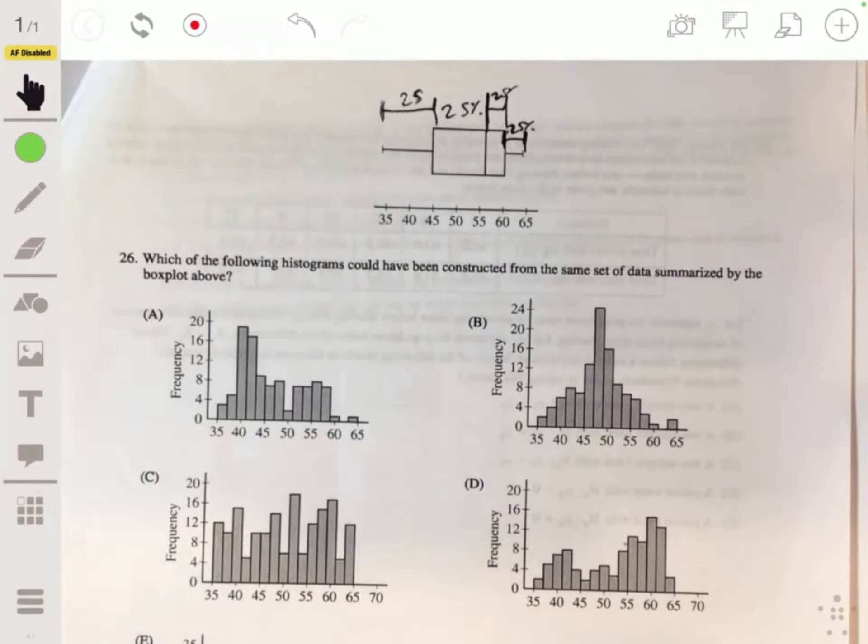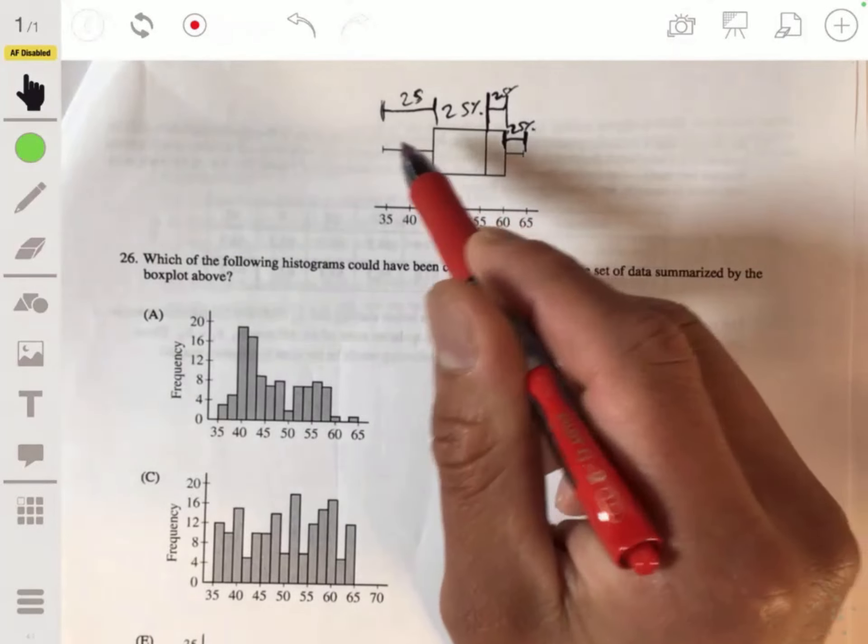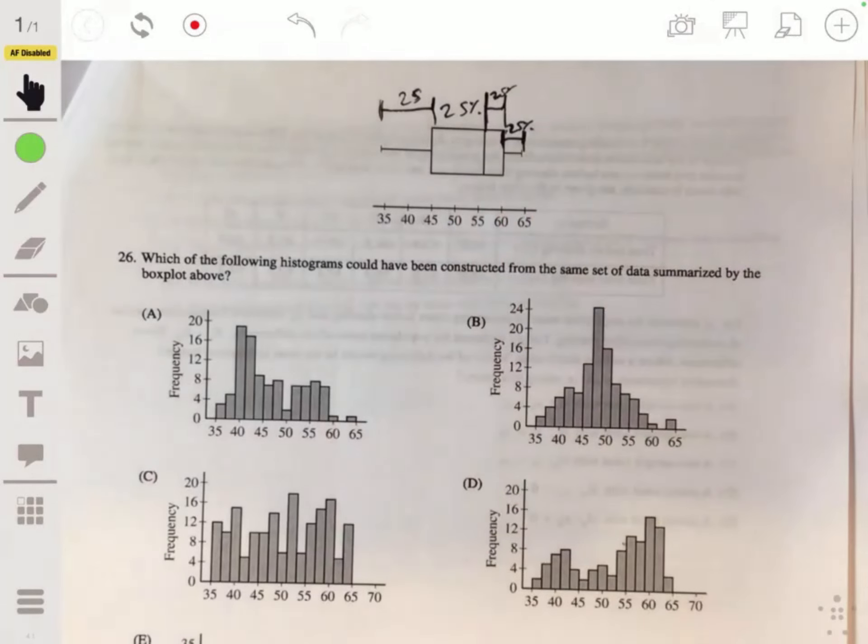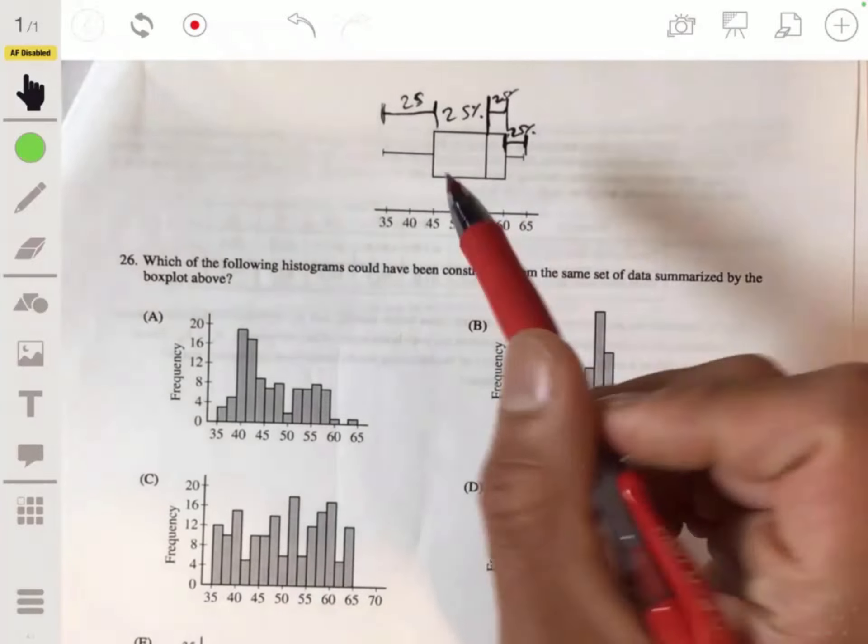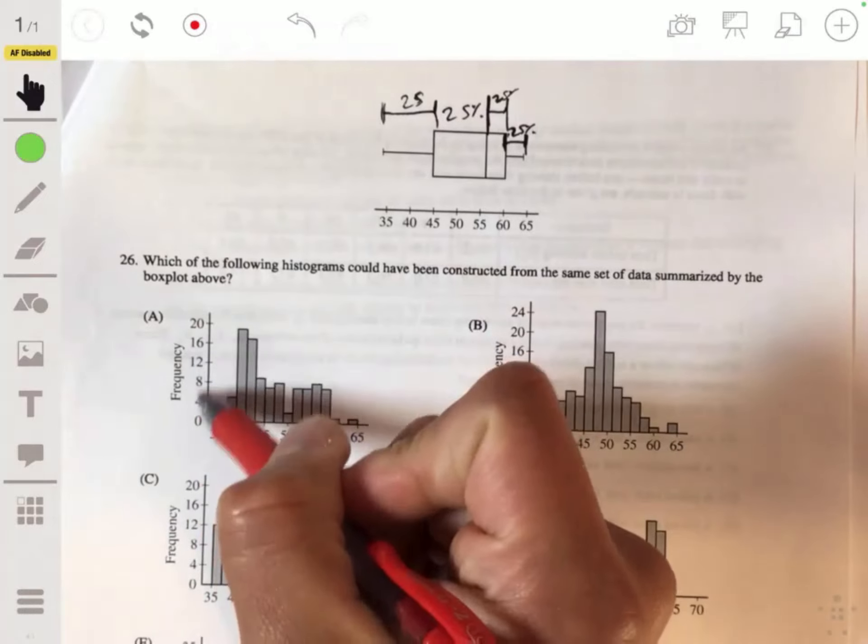So essentially, don't get confused by the length of the intervals. We don't know how many individuals are in each of these, we just know that 25% of the total. But here we can calculate 25% of the total by looking at the frequency.